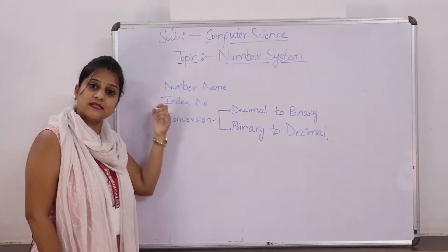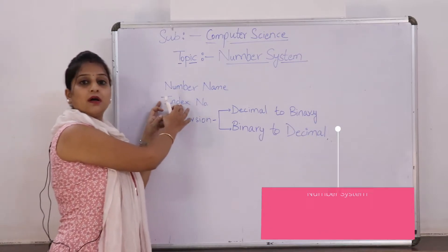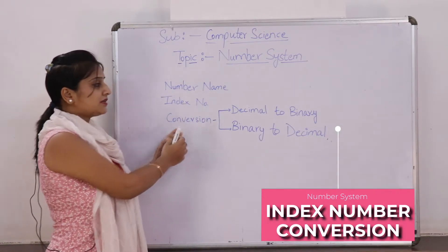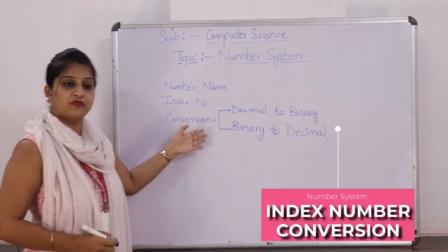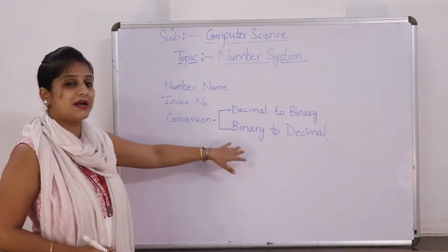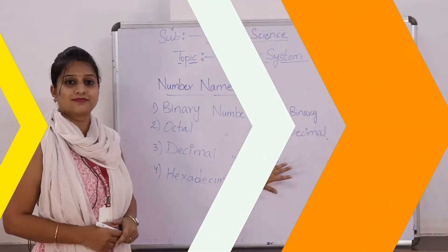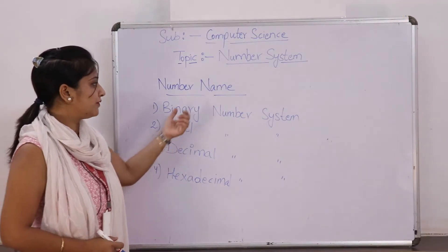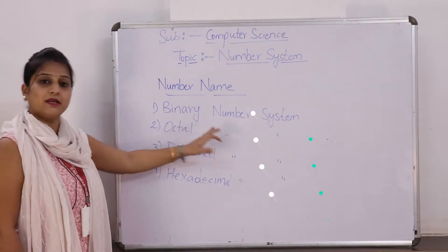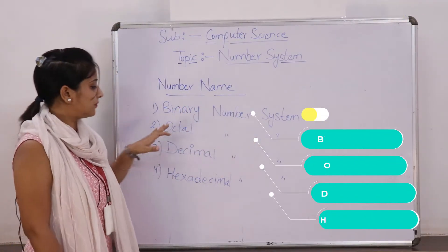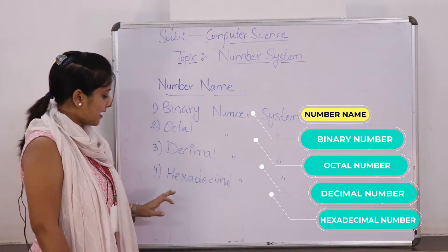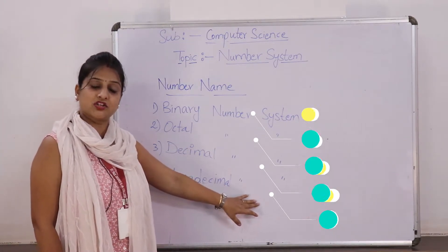We are going to discuss these things in the number system: number name, index number, and the conversion from decimal to binary and binary to decimal. We have these number names: binary number system, octal number system, decimal number system, and the hexadecimal number system.